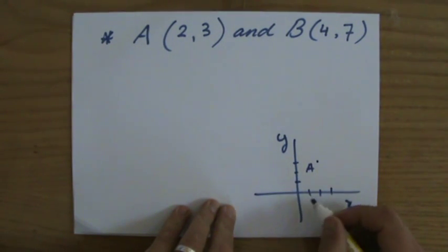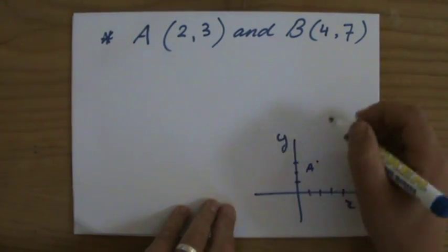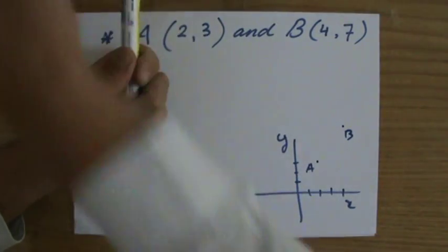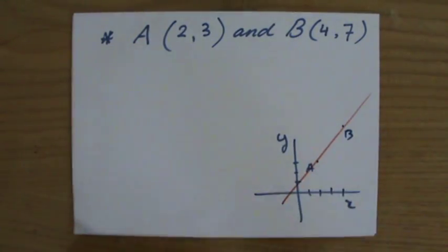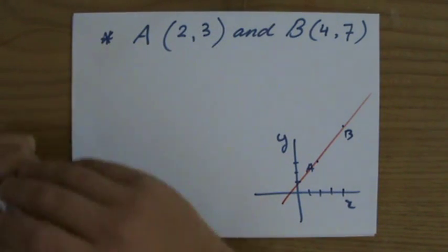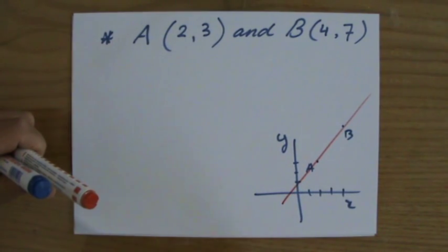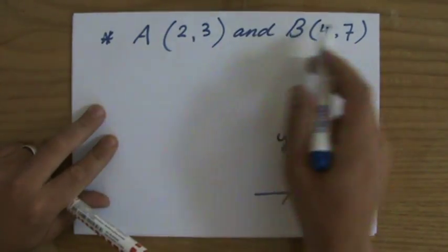And B is at 4,7. So, well, roughly here. So the line going through A and B looks roughly like this. Now, what can I really say about that line? That it's going up. And does that make my gradient positive?